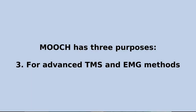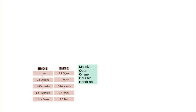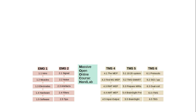Finally, the third purpose of Mooch is to give an advanced treatment of the research methods transcranial magnetic stimulation, TMS, and electromyography, EMG. There are five chapters devoted to these two methods in Mooch. The first two chapters give a general introduction to EMG, starting with videos EMG 1.1 and EMG 2.1. The next three chapters are about TMS: the first begins with TMS 4.1 and describes the motor evoked potential or MEP; the second begins with TMS 5.1 and looks at using other brain imaging methods to improve your TMS research; the final chapter begins with TMS 6.1 and looks at the many different TMS protocols that are available.